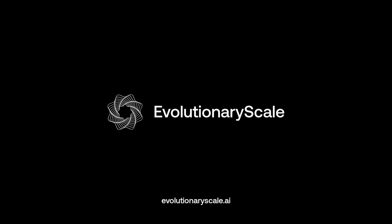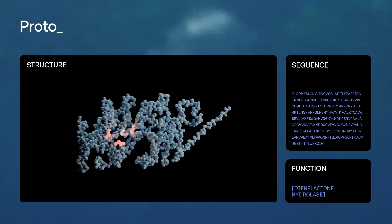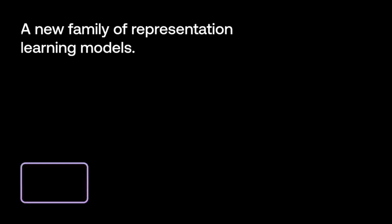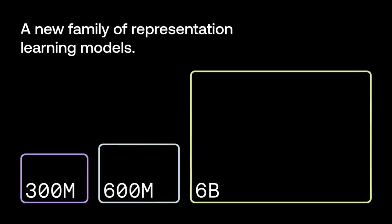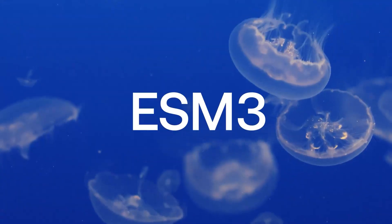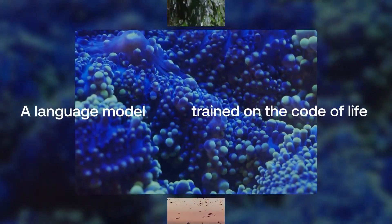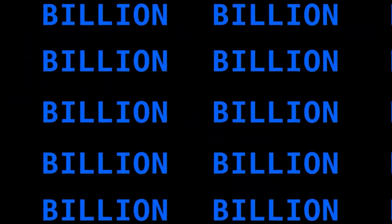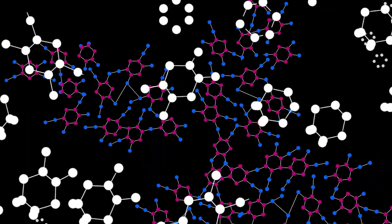Evolutionary Scale is a biotech start-up harnessing generative AI to redesign how we approach therapeutic discovery. At the heart of their innovation is ESM3, a next-generation language model trained on over 2.7 billion protein sequences.